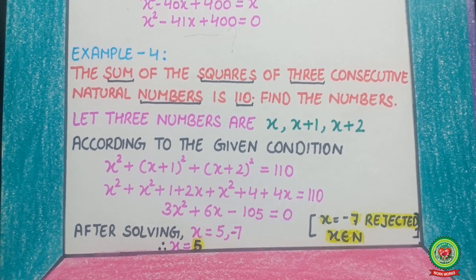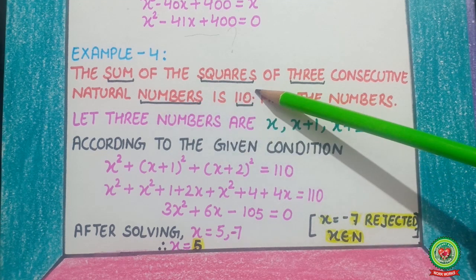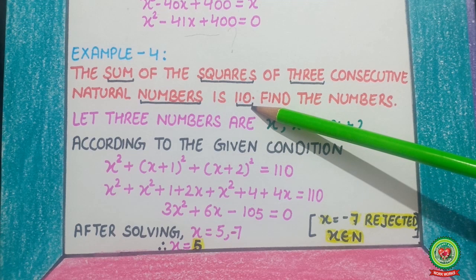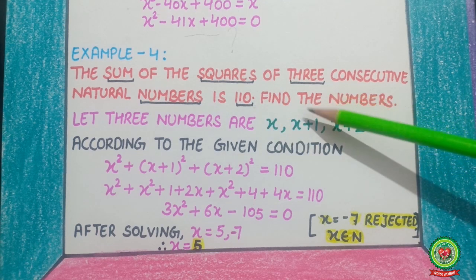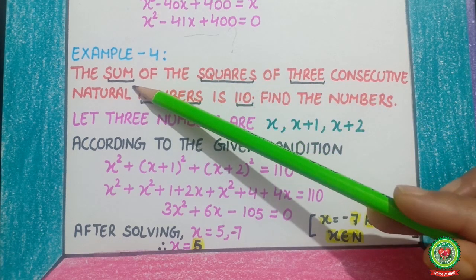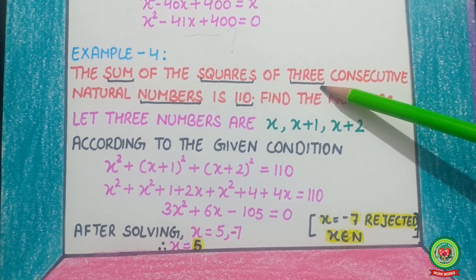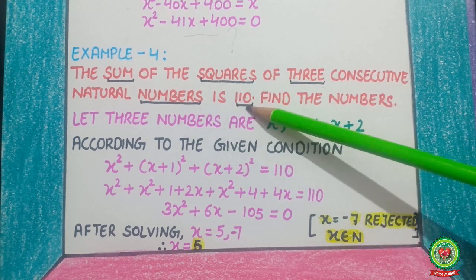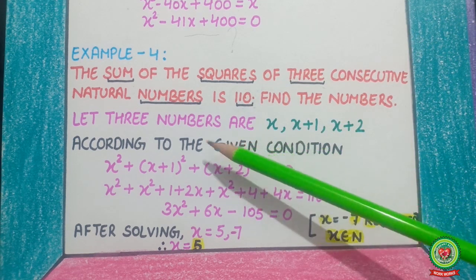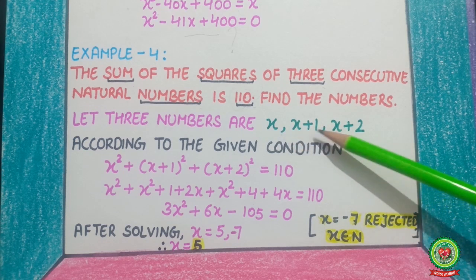Example number 4: the sum of the squares of three consecutive natural numbers is 110. We have to find the numbers. The keywords are: sum of the squares, three consecutive natural numbers, equals 110. Let the three natural numbers be x, x plus 1, and x plus 2.